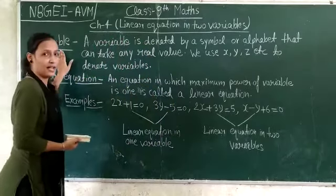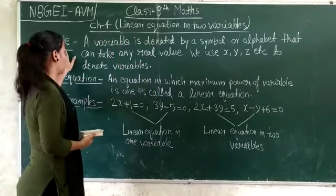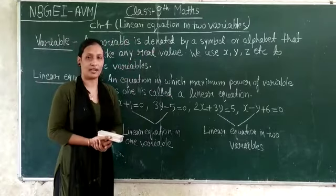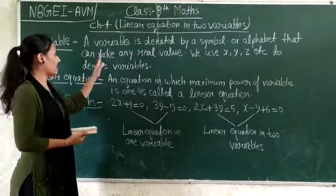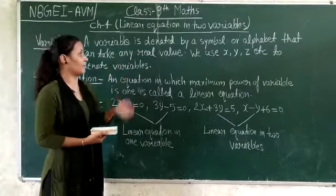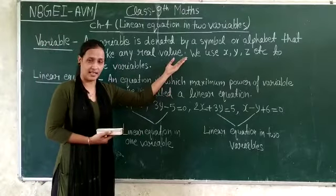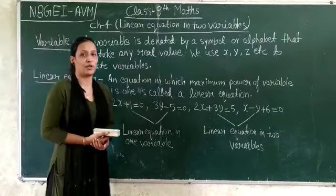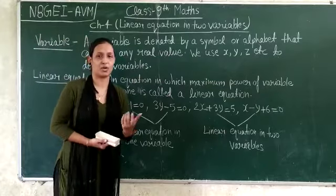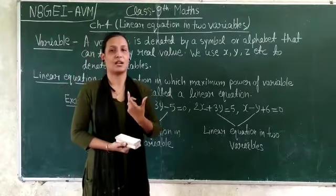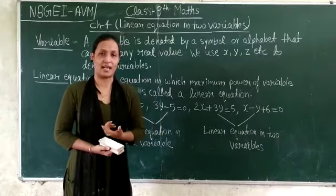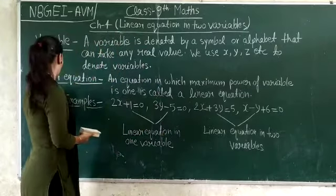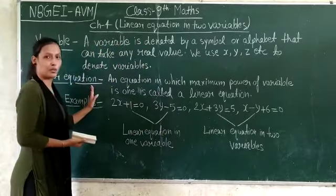First, what are the variables? A variable is denoted by a symbol or alphabet that can take any real value. We use x, y, z etc. to denote variables. We all know that in equations we can see the terms x, y, z — these terms are known as the variables.